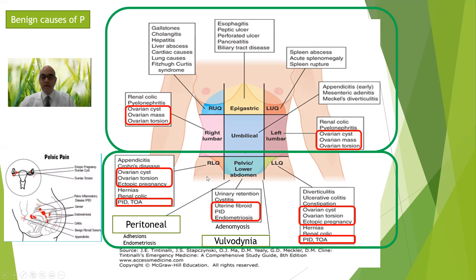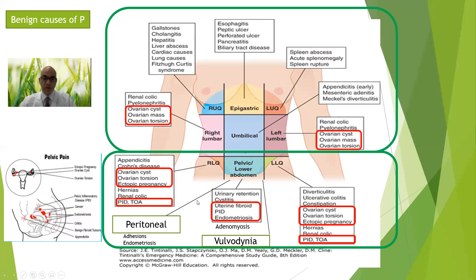In the right iliac fossa you must think of appendicitis as the common cause, along with Crohn's disease and hernia as gastrointestinal causes, and renal causes like ureteric stones or renal colic. Gynecologically, you look at the ovary, fallopian tube, and parametrium — you may find ovarian cysts, parovarian cysts, paratubal cysts, ovarian torsion, ectopic pregnancy, PID as part of upper genital infection, and sometimes ovarian abscess.